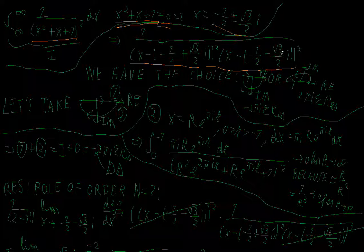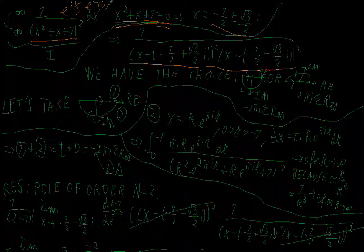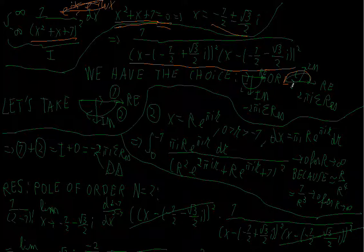We have the choice about the path we take because we have no exponential — we don't have something like e^(ix) or e^(−ωix). So we are free to choose our path, because we are not going to prove that the part along the circular arc vanishes due to exponential decay, but for another reason.